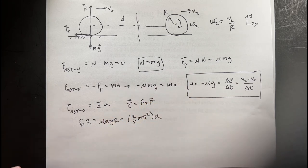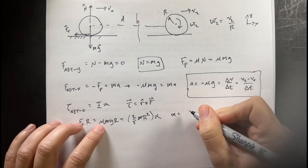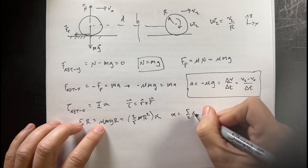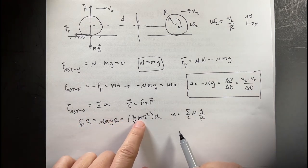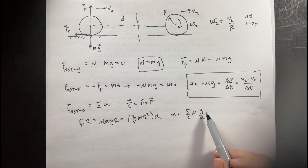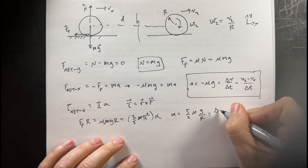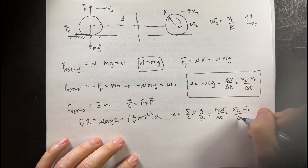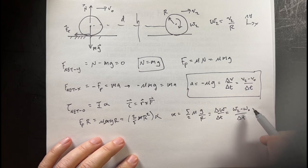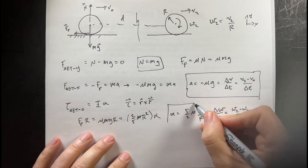So, again, the mass cancels. But then I can get an expression for the angular acceleration. I get alpha equals five-halves mu G over R. Let's just check units. Mu has no units. This is in meters per second squared divided by meters gives me one over second squared. So, that is right. And this is going to be equal to delta omega over delta T, or omega 2 minus omega 0 over delta T. Now, I know omega 0 is 0. But I don't know delta T. So, here I have this expression right here.